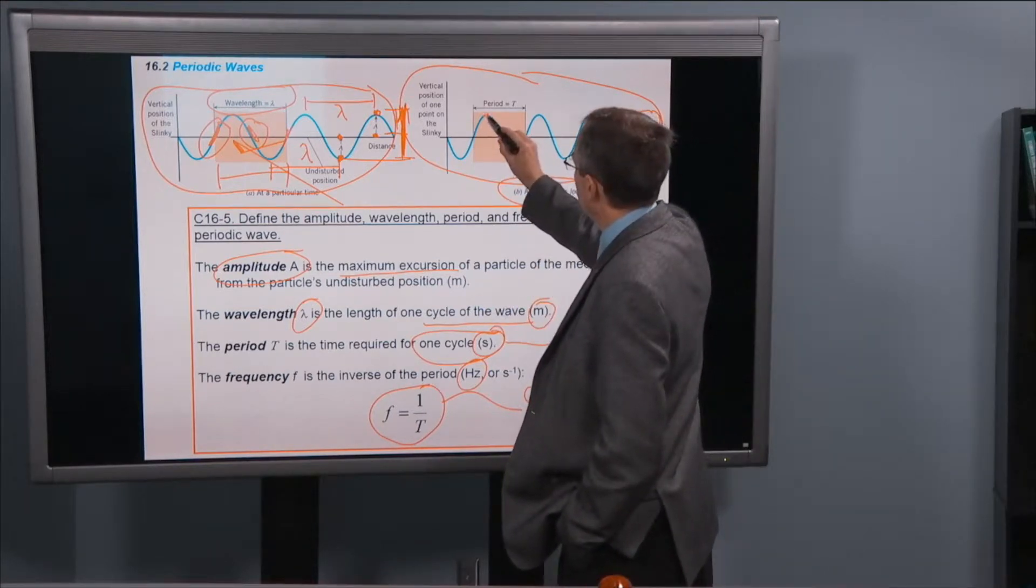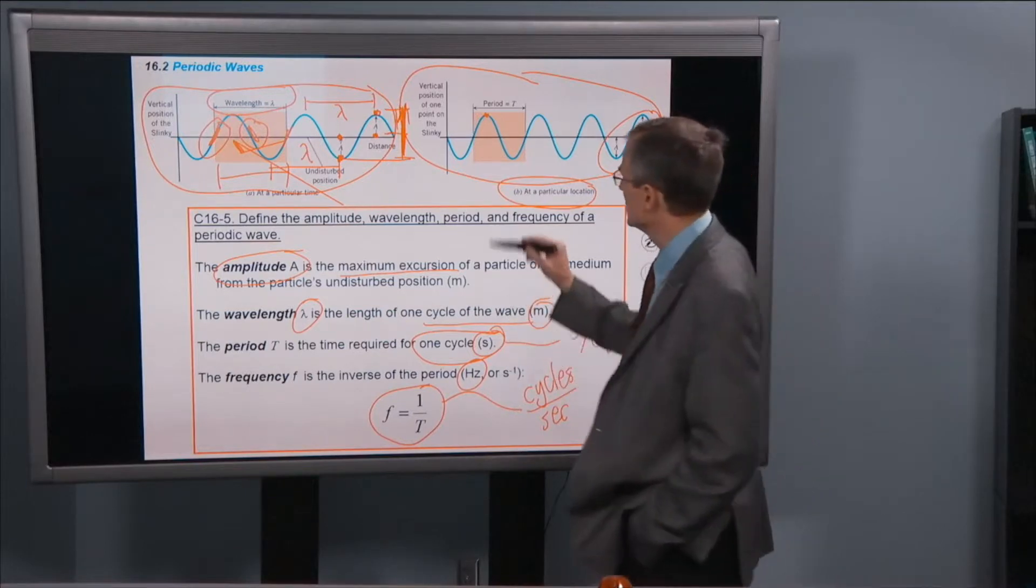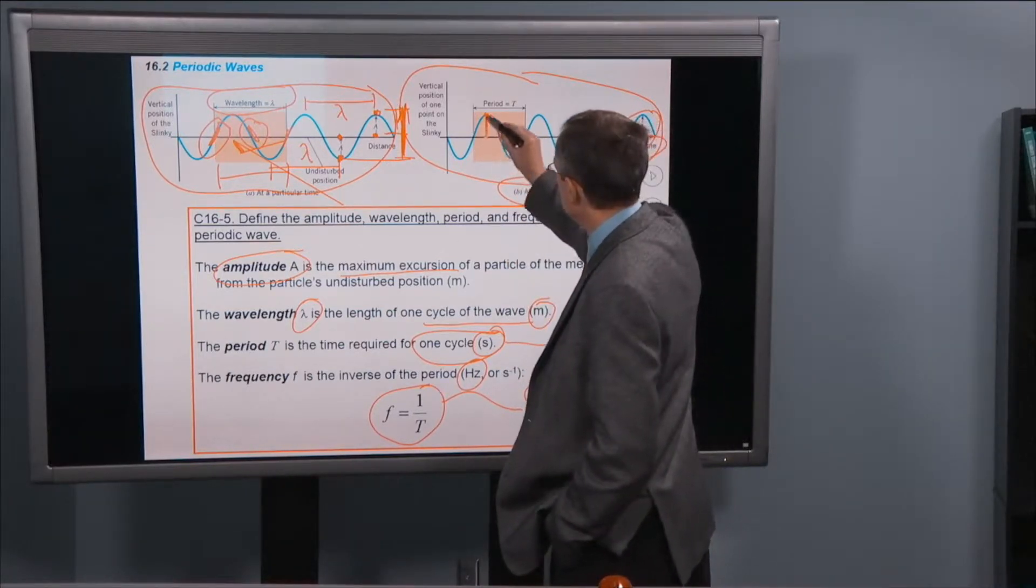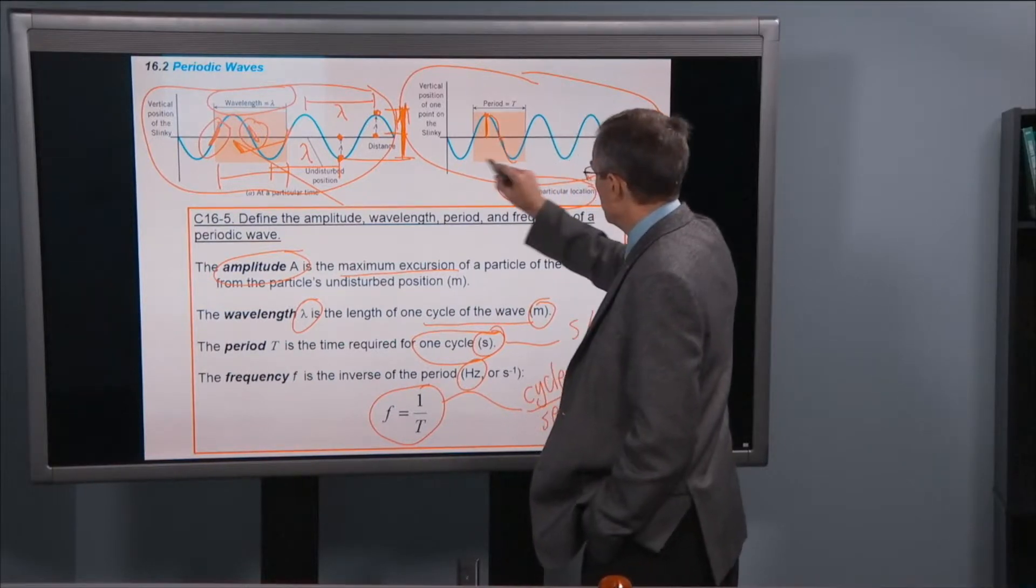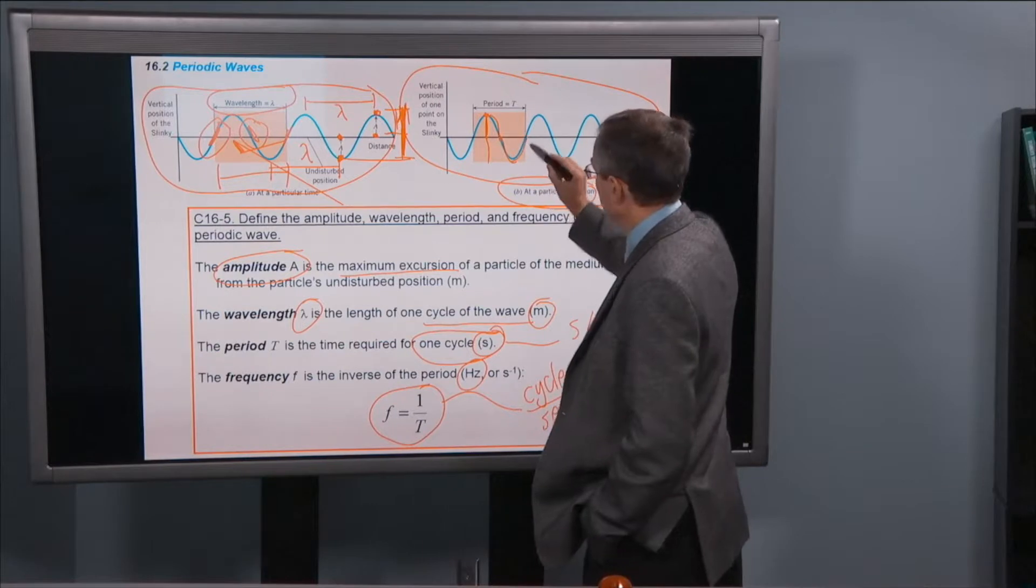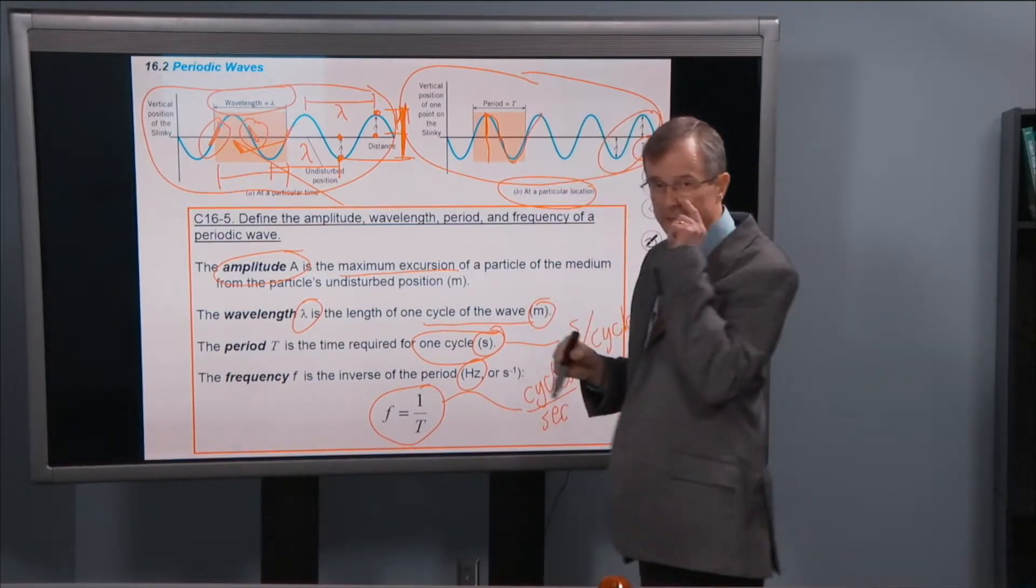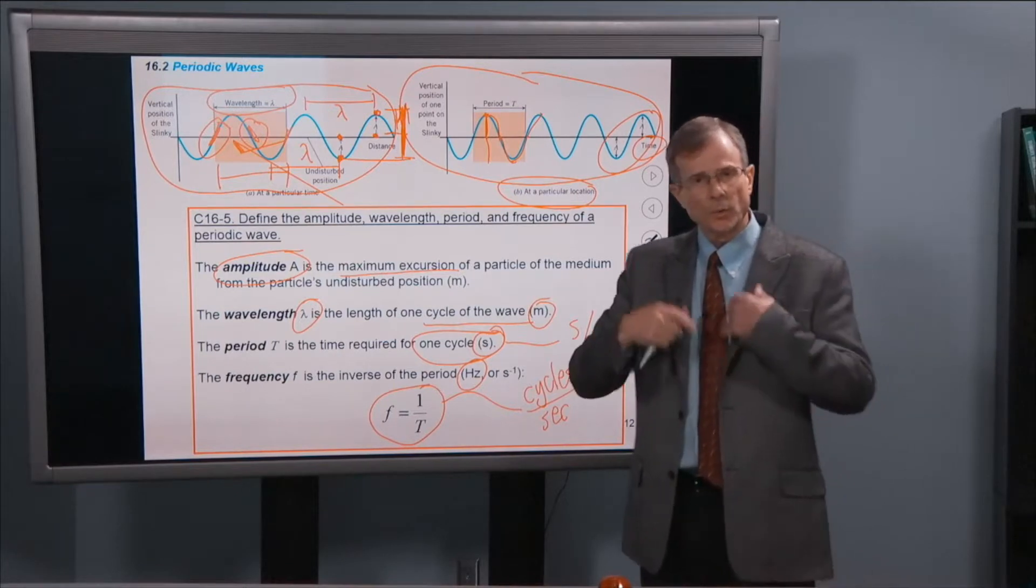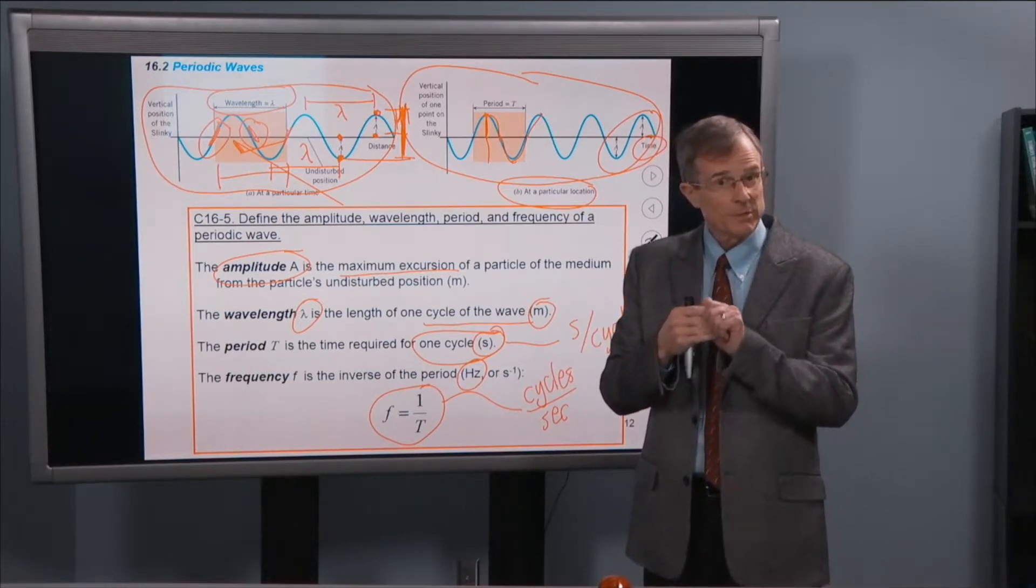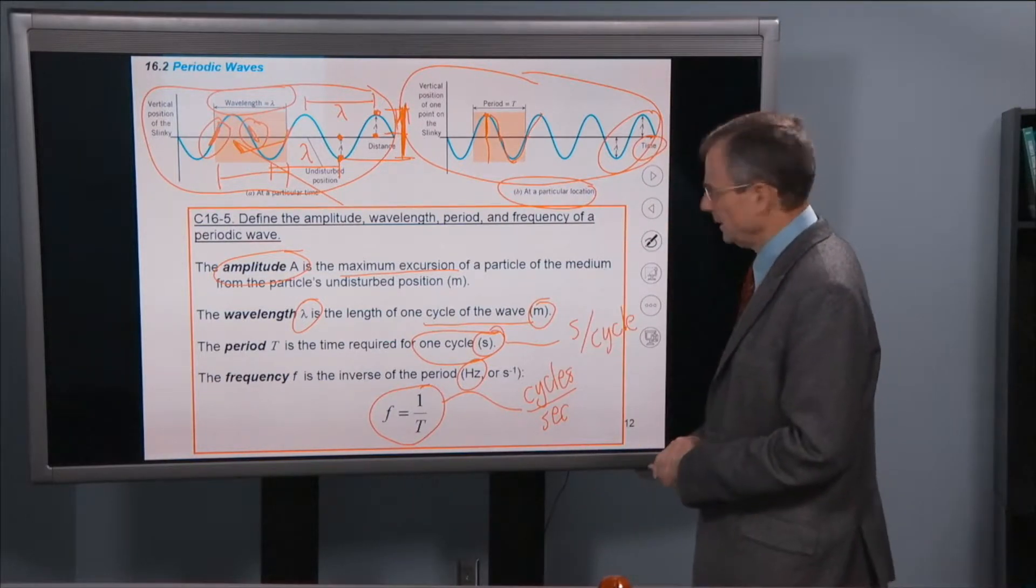If you look at, during one complete period, how far an object travels, it'll travel down to here. That'll be the amplitude, the distance of the amplitude, down to here. Remember, we're looking as a function of time, another amplitude. Back up to here, that'll be another amplitude. And then back up to here will be yet another amplitude. So during one cycle, each particle in the wave travels a total distance of four times the amplitude. That's that.